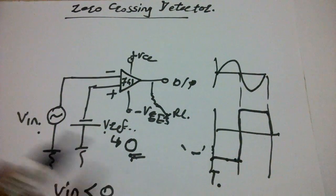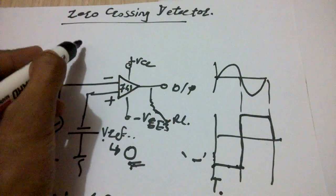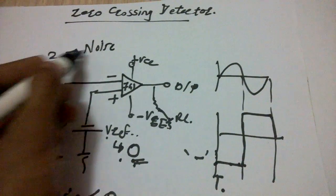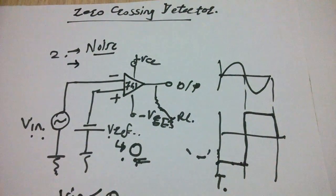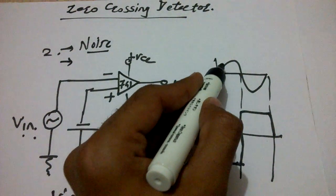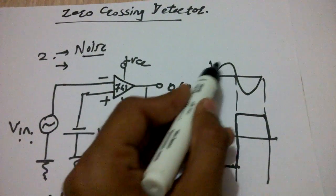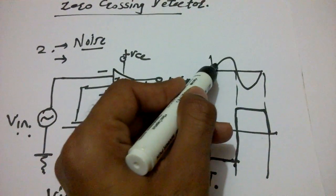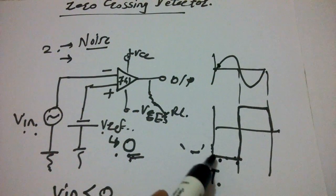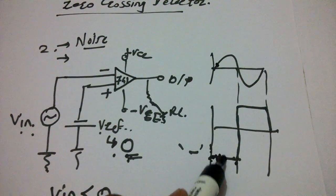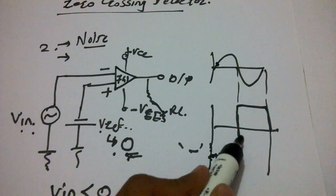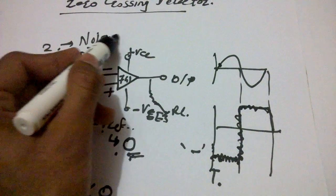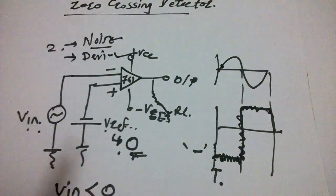There are two basic problems with this circuit. The first problem is a noise problem — since we compare the input voltage with zero, noise interference will be present. The second problem is when V-in changes very slowly; at that time the output voltage also changes very slowly, following the input. So for slow changes, there are some deviations in the output. We need to avoid both the noise problem and this deviation problem.